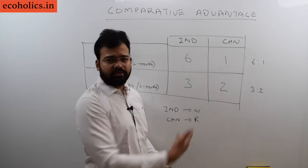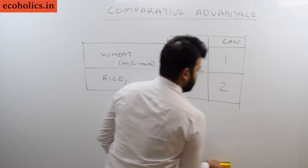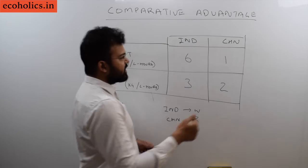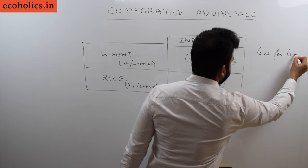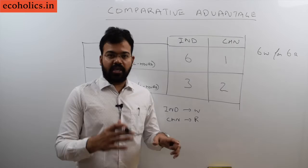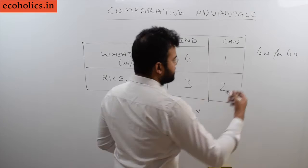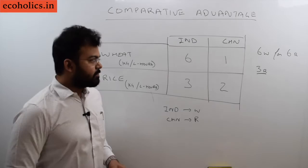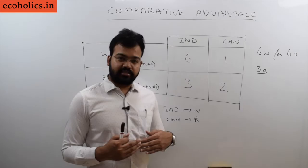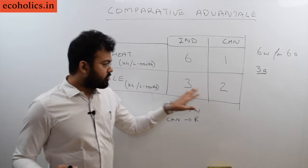Now suppose that India is trying to engage in trade. India is producing 6W and they are exchanging for 6R. It means India will produce 6 kg of wheat and they will exchange this 6 kg of wheat with 6 kg of rice produced by China. Now what happened if we see that India is now getting 3R extra. Why 3R extra? Because India can produce 3R domestically. But with the help of international trade, they are getting 3 more kg of rice. So India is getting 3R just because of international trade.